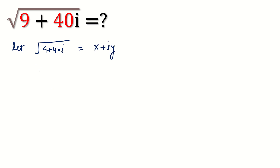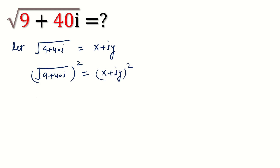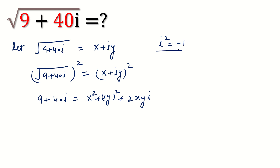Squaring both sides, we can write 9 plus 40i is equal to x plus iy whole squared. Expanding: 9 plus 40i is equal to x squared plus i squared y squared plus 2xyi. We know that i squared is equal to minus 1, so this becomes x squared minus y squared plus 2xyi.